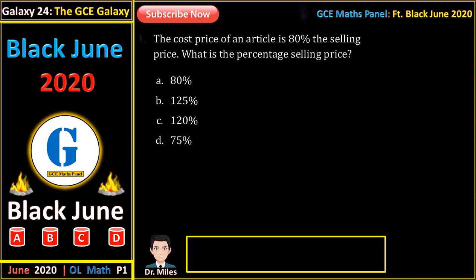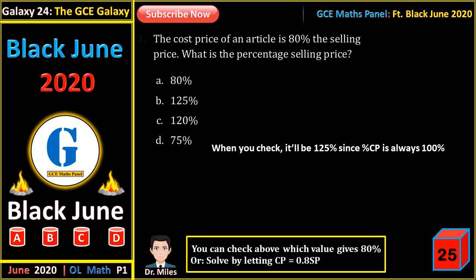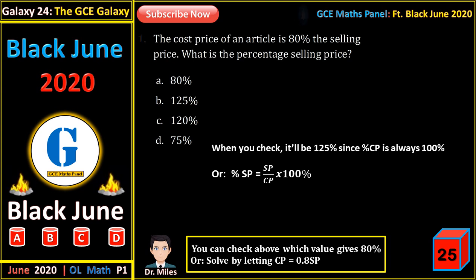The cost price of an article is 80% of the selling price. What is the percentage selling price? You can check which value gives us 80%, knowing that cost price is always equal to 100. Letting cost price equal 0.8 times the selling price, the percentage selling price equals selling price divided by cost price times 100%. Since cost price is 0.8 times selling price, the selling prices cancel, leaving 1 divided by 0.8 times 100%, which is 125%.